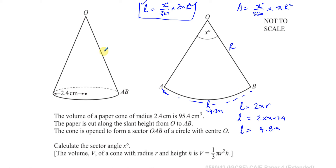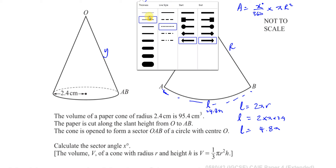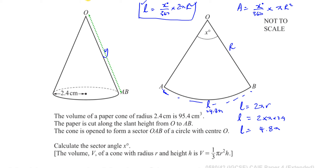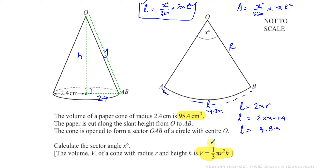I'll call the slant height Y. I can find it using Pythagoras' theorem, since we have a right angle — the vertical height and the base radius of 2.4 cm form the two shorter sides. I don't know the vertical height yet, but I can find it using the volume information given. The volume formula for a cone is (1/3)πr²h.